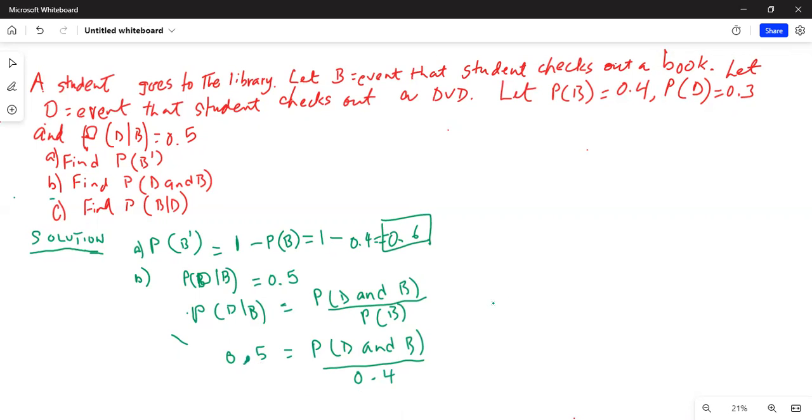So this is 0.5. Now I will multiply both sides by 0.4. Multiply by 0.4, multiply the right-hand side of the equal sign by 0.4 also.